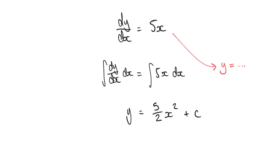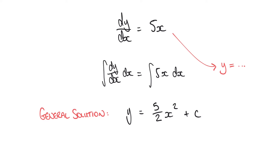That c on the end is our unknown constant because we're performing an indefinite integral. At this stage we've done all we can with the information we've been given. We found our solution in the form y equals, but we don't know the value of this unknown constant. This is what we call the general solution to our differential equation.